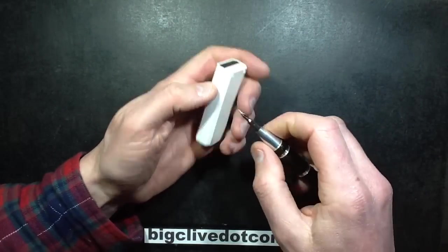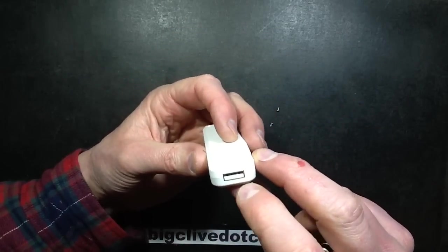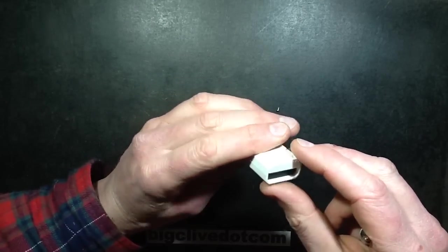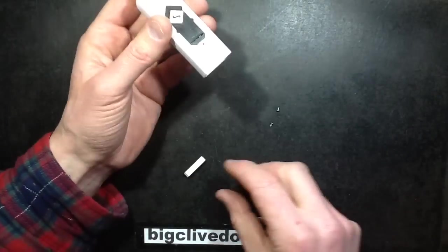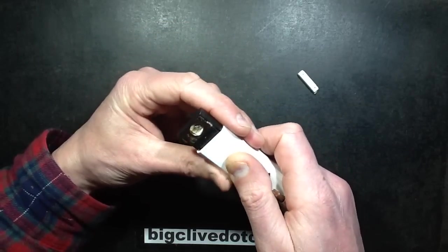The case doesn't seem to be physically in two parts. It seems to be one moulded piece. If it is in two parts, it's glued. But it looks as though this is going to slide out this end. That little bit drops out. So is this going to slide out completely now?